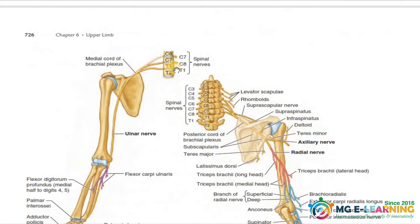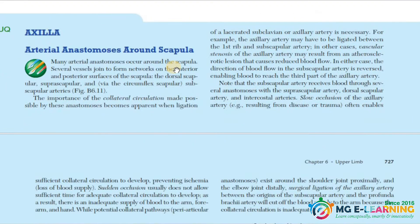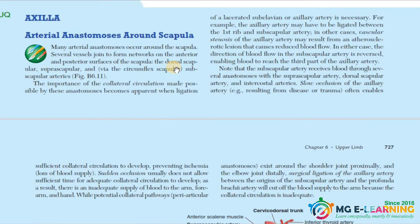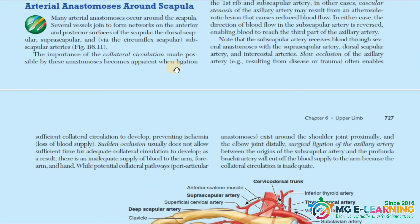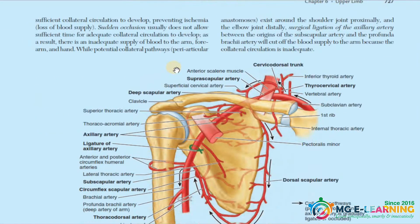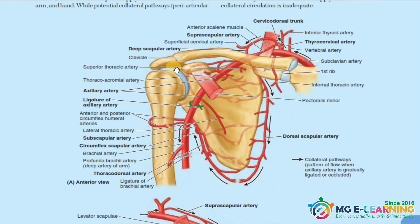Regarding brachial plexus — after that we have the arterial anastomosis around the scapula in the axilla. This is a university question. You need to draw the diagram of the anastomosis around the scapula, as this diagram is commonly asked.